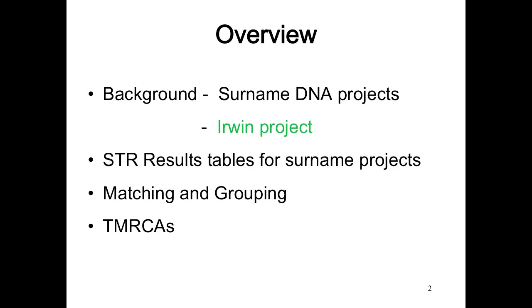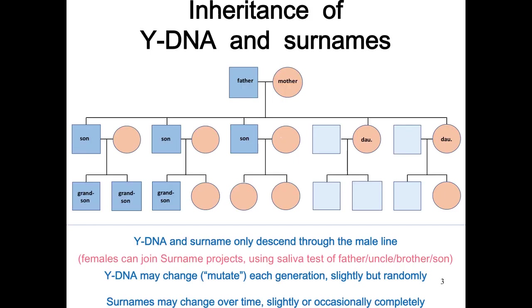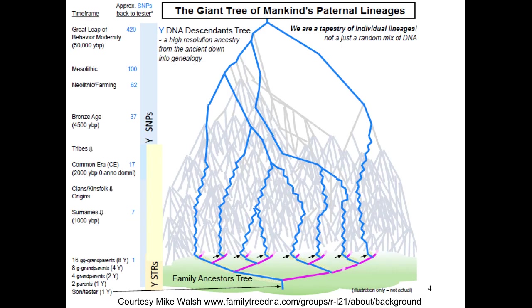Y-DNA is about male inheritance, like surnames — males only carry it, females can't. We get mutations that happen slowly, and surnames change as well — lots of parallels. Spelling changes, but occasionally you get a radical change. NPEs have been introduced already. As genealogists, most of us want to get the DNA into a family tree.